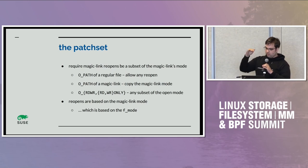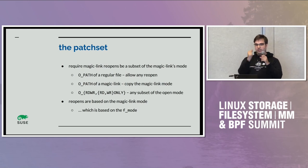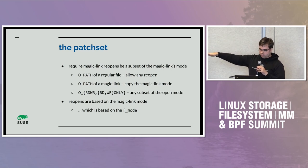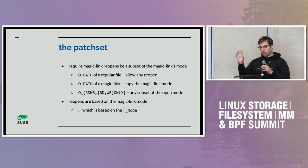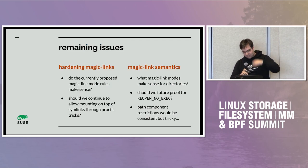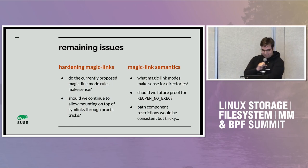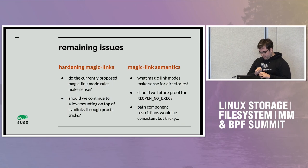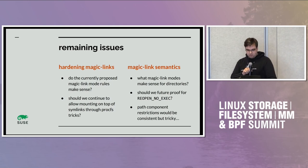When you do an opath, it copies the mode. So if you opath proc/[pid]/exe of the container, you get the same restrictions — restrictions get copied with opath. Reopens are based on the magic link mode, which is based on the f_mode. Andy suggested these semantics when we were talking about it, and I think there are some slightly hairy issues, but it does protect against this one thing.